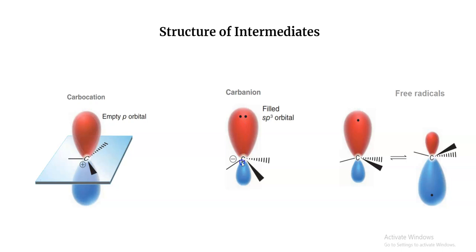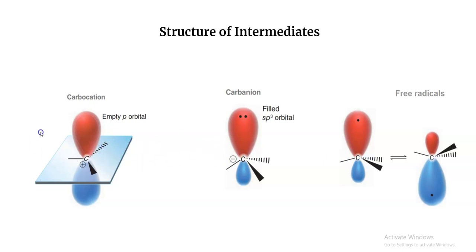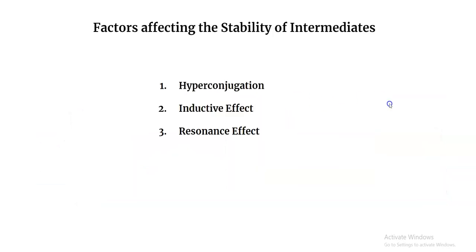In the trigonal pyramidal carbanion structure, the three bonds come down from the plane and there is a p orbital with the lone pair of electrons above the plane. Free radicals are a bit tricky — they are not completely a four-electron-domain species because the lone electron is unpaired. So the structure is somewhere in between trigonal planar and trigonal pyramidal — not a perfect flat plane, but also not as hinged as the carbanion.